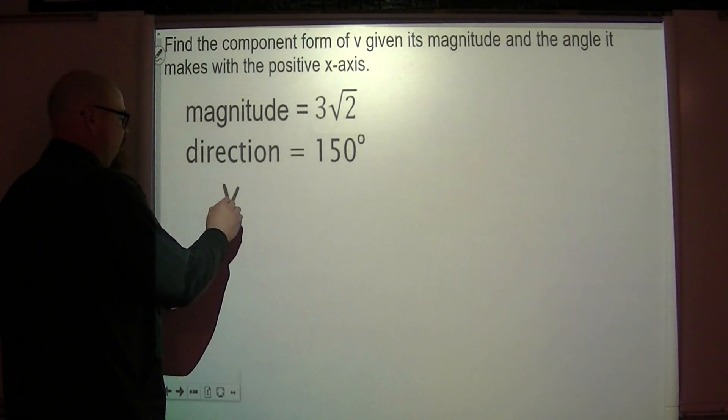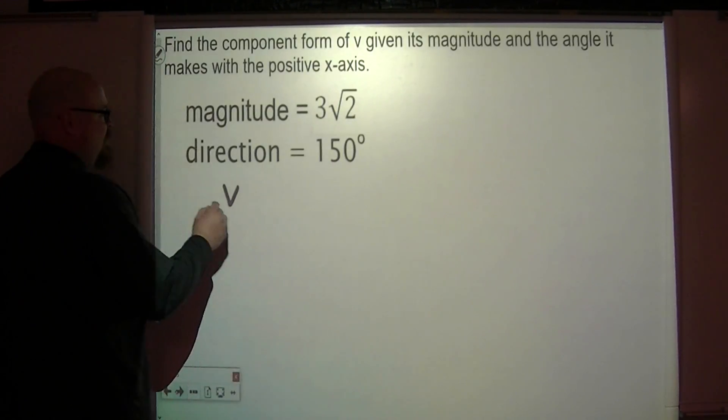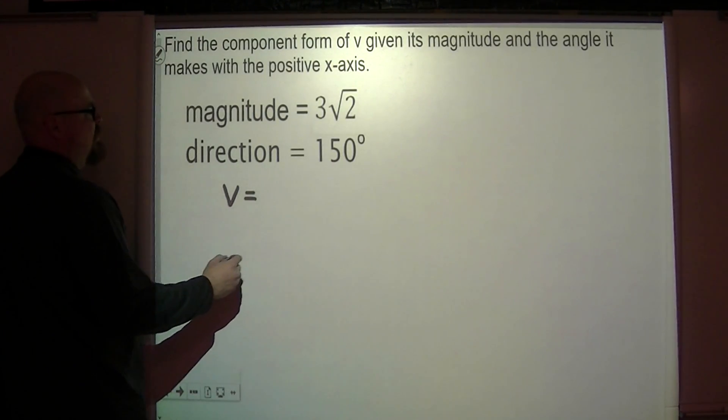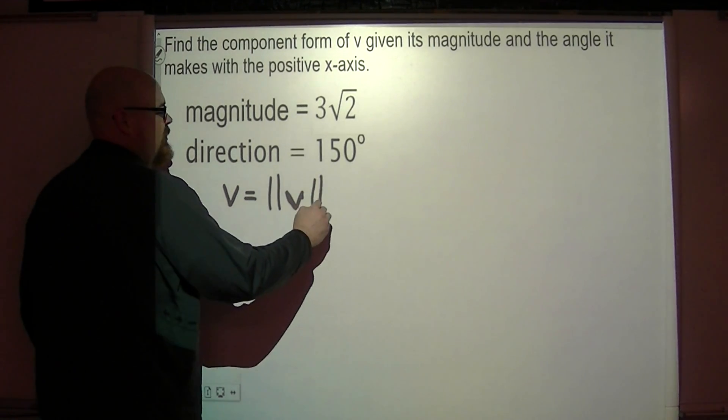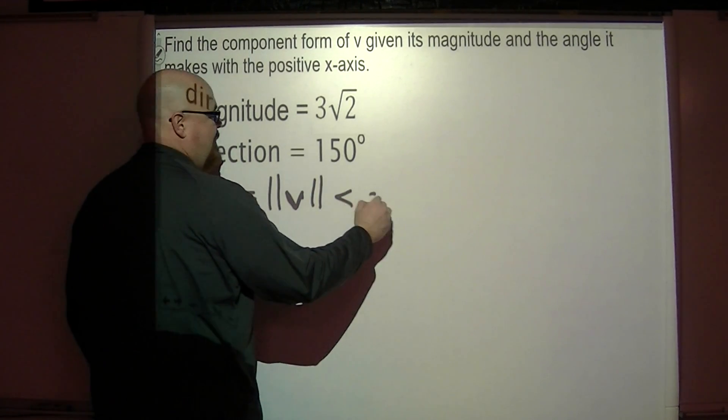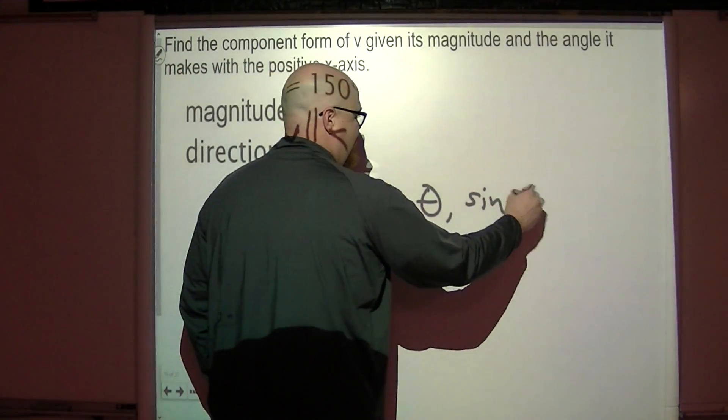You could say that some vector v can be written with its magnitude, followed by the cosine of its direction angle and the sine of its direction angle.